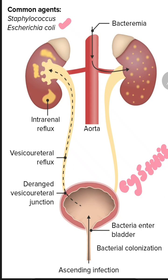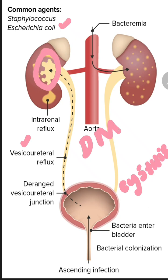Because of the vesicoureteral reflux, the infection ascends to the medulla of your kidney. When your kidney medulla is damaged, the medulla's primary function — the countercurrent mechanism, which is the mechanism for concentrating urine — is impaired, so this patient will produce dilute urine.